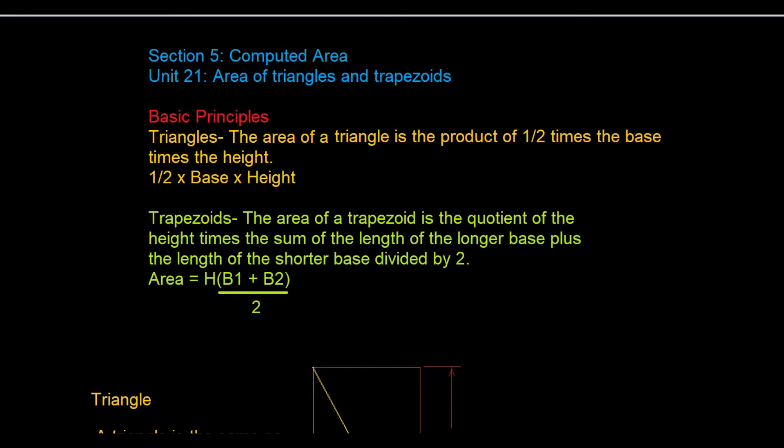In trapezoids, the area of a trapezoid is the quotient of the height times the sum of the length of the longer base plus the length of the shorter base divided by 2.